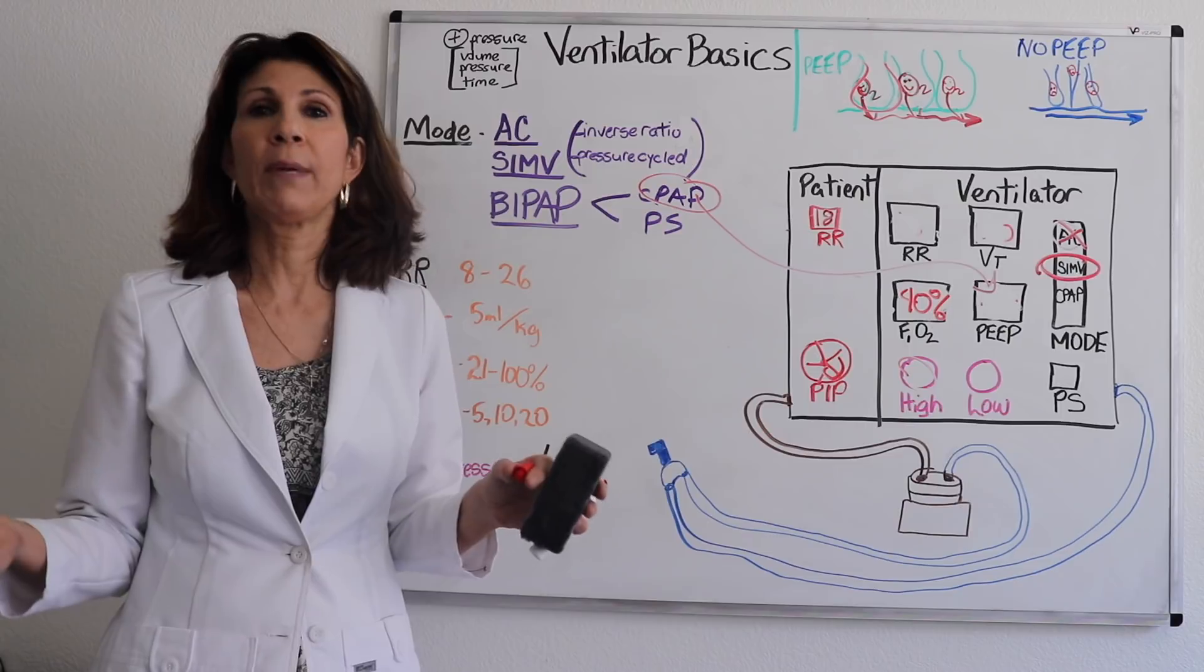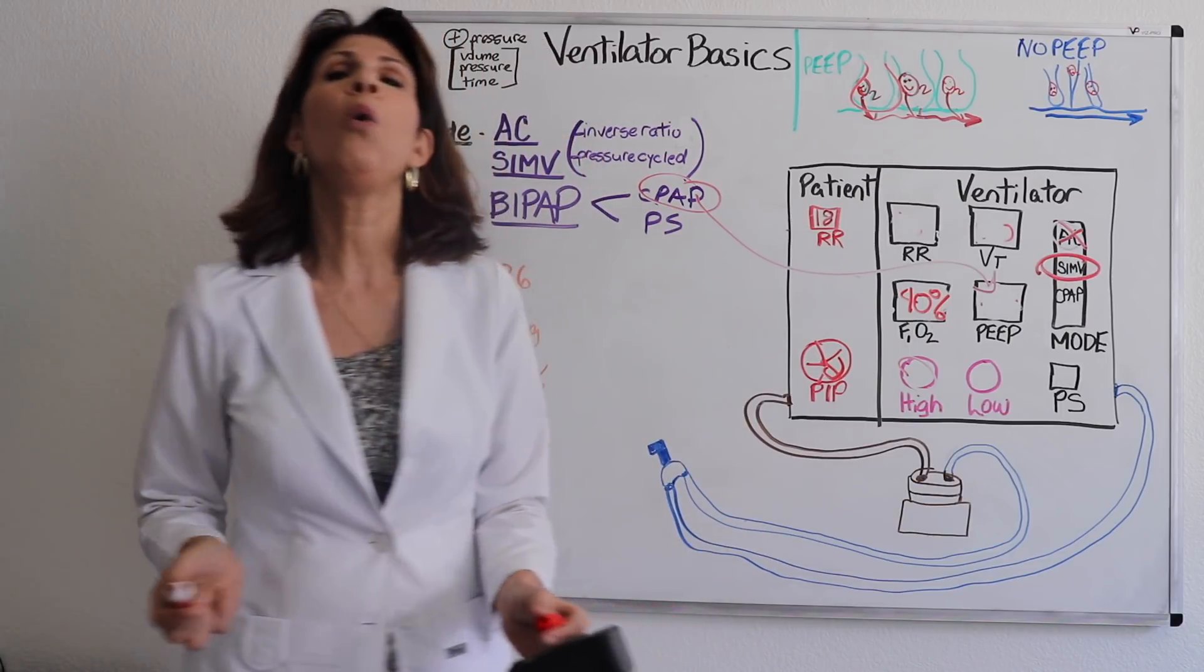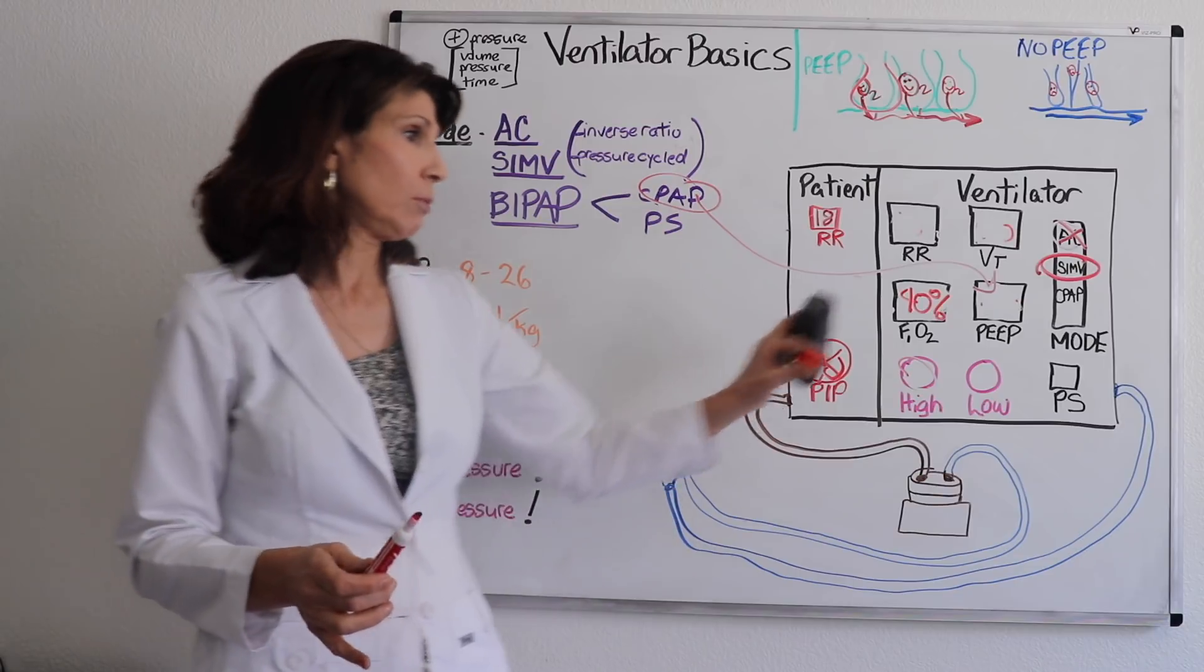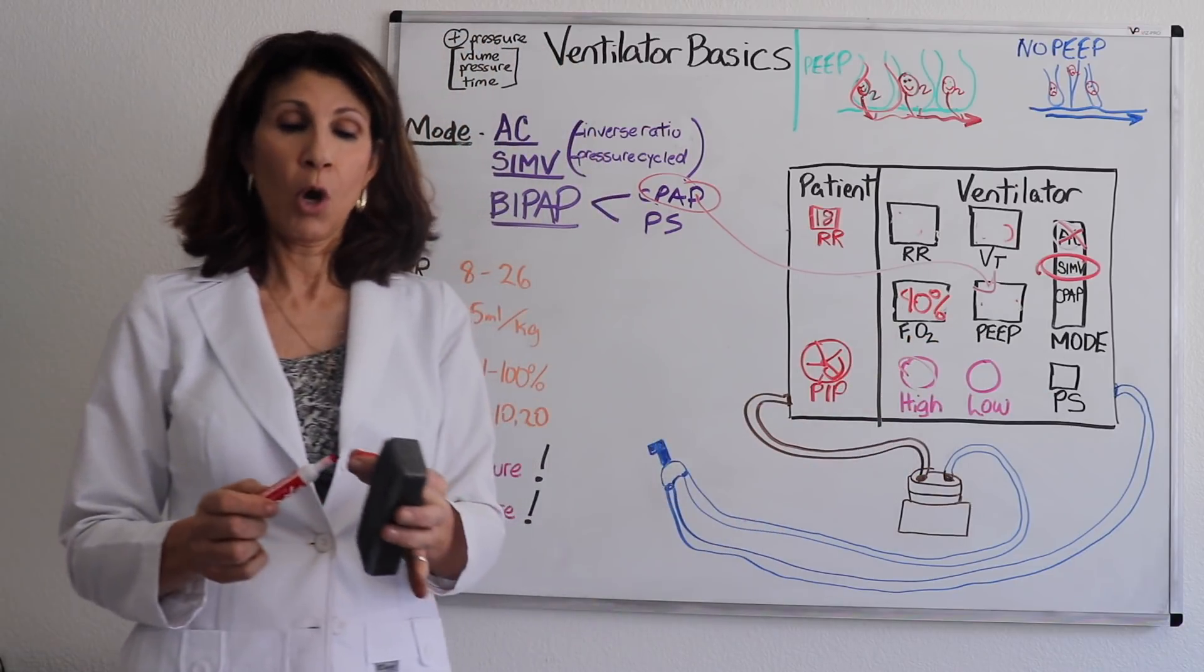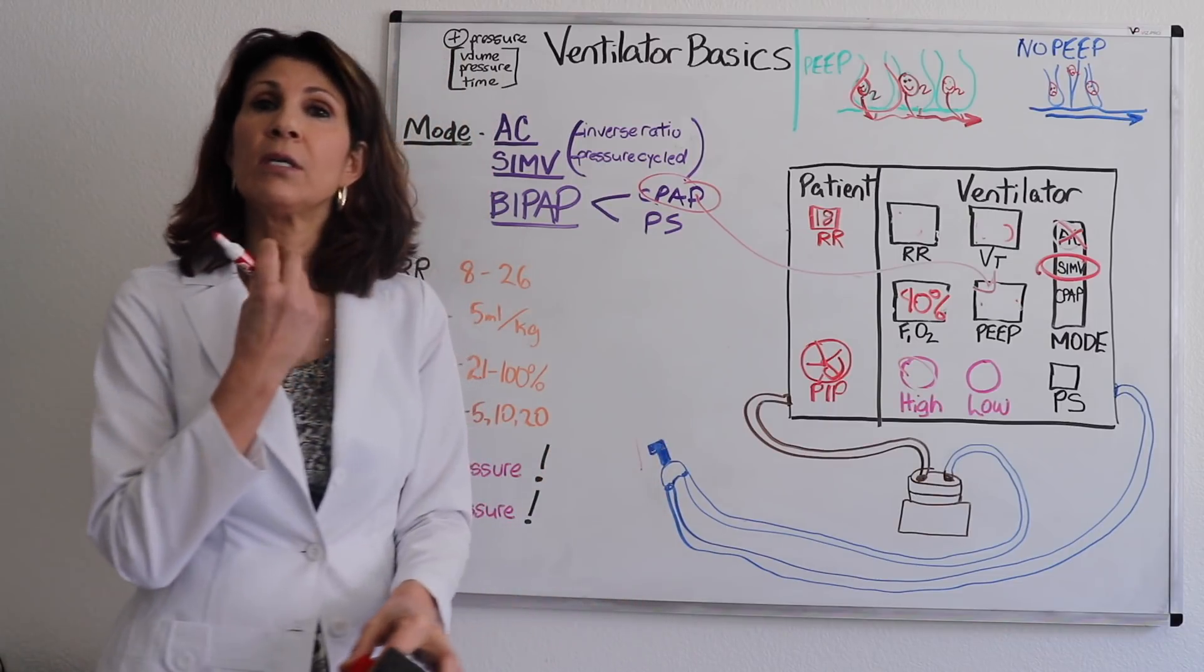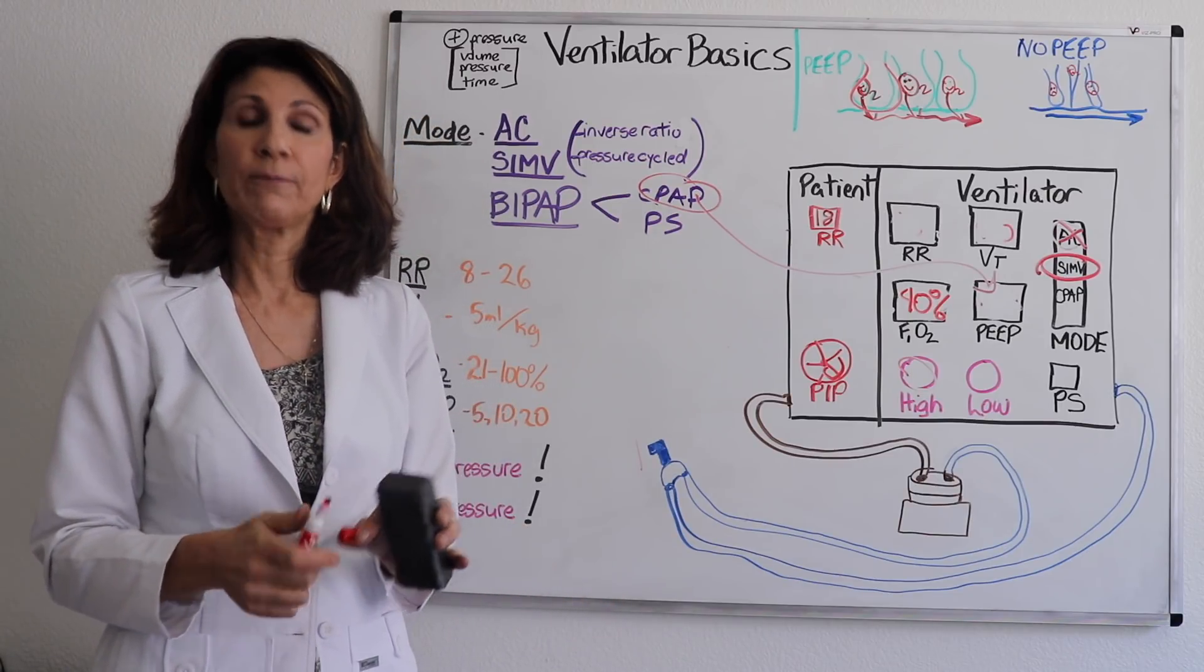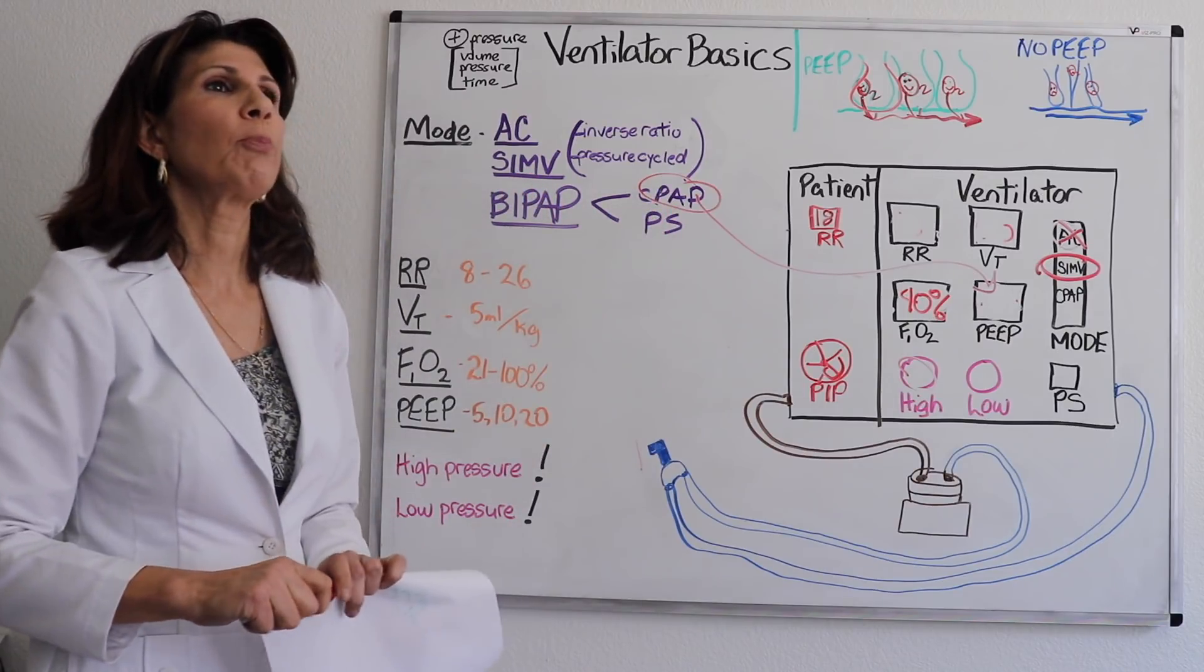So things that would cause a low pressure alarm limit would be things like disconnected from the ventilator, really common, or would be a little more serious is that there would be a hole in the ventilator tubing or something wrong with the circuit. So if you don't know immediately, just like with the high pressure, if you don't know immediately with either one of these alarms, you immediately discontinue them. Now, this is the universal adapter for the patient's endotracheal tube, disconnect it and manually ventilate the patient with a bag valve and mask.